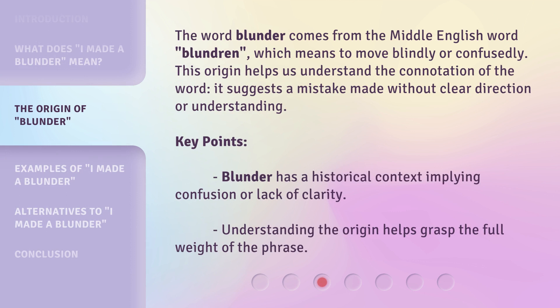The word 'blunder' comes from the Middle English word 'blunderin,' which means to move blindly or confusedly. This origin helps us understand the connotation of the word — it suggests a mistake made without clear direction or understanding. Key points: 'blunder' has a historical context implying confusion or lack of clarity, and understanding the origin helps grasp the full weight of the phrase.